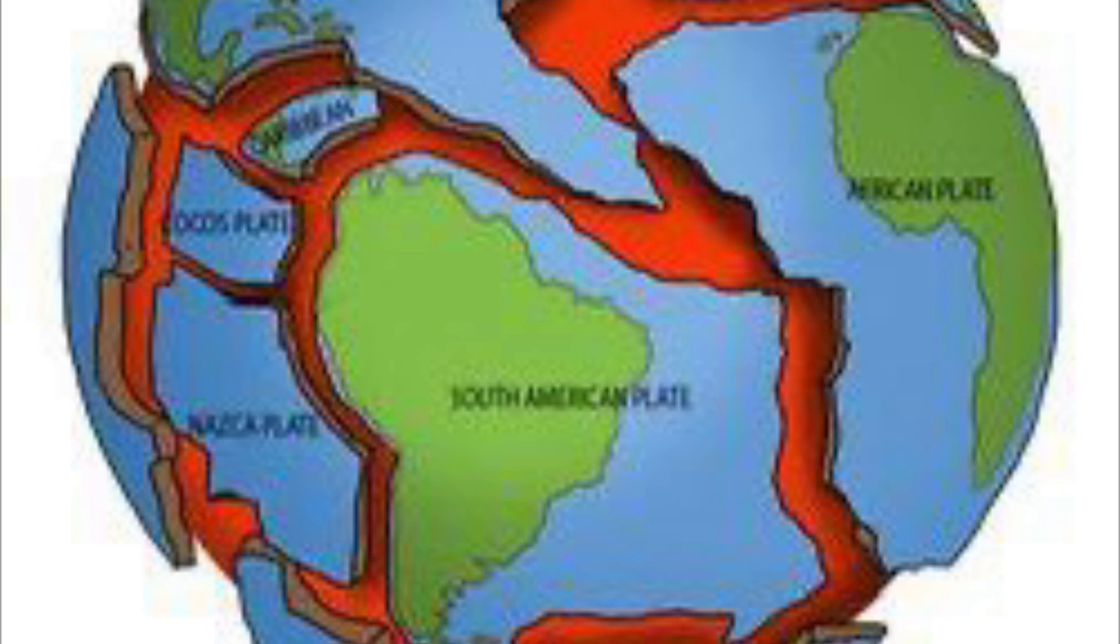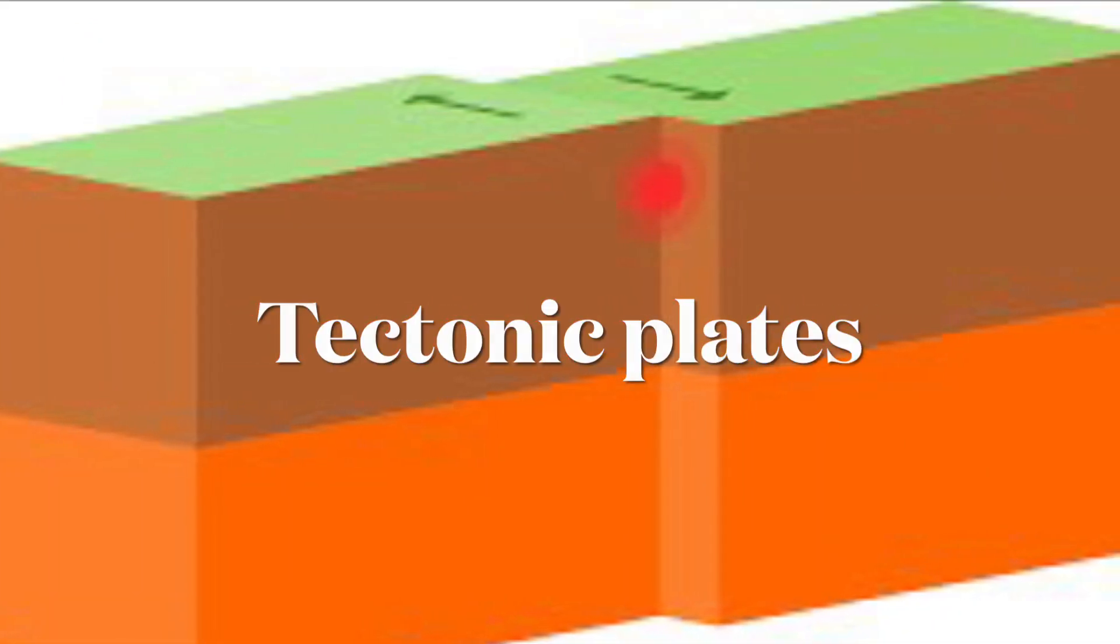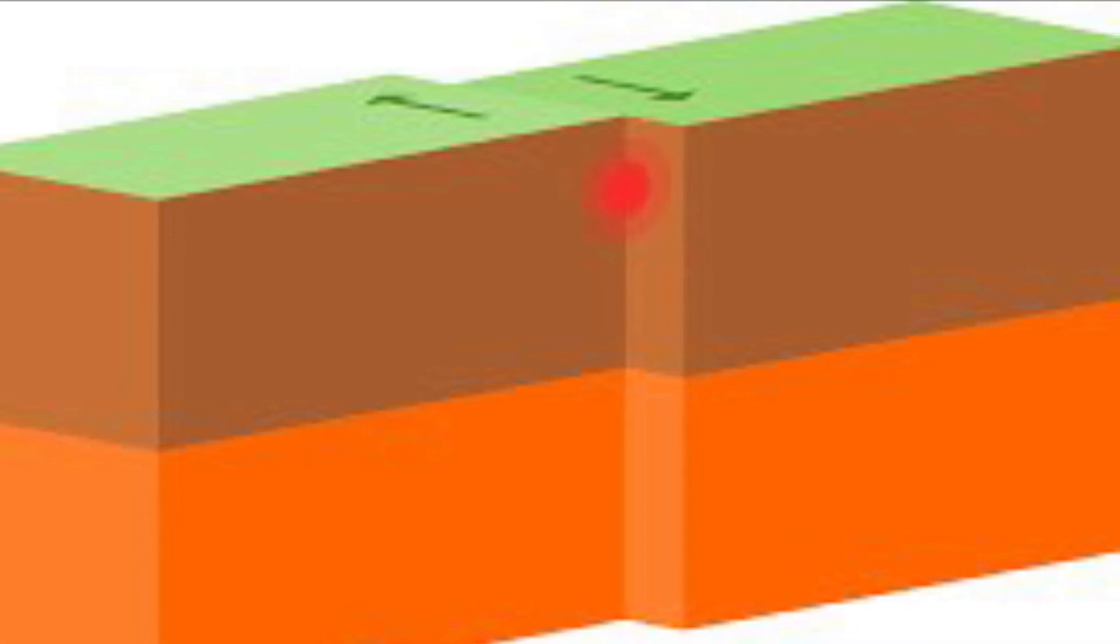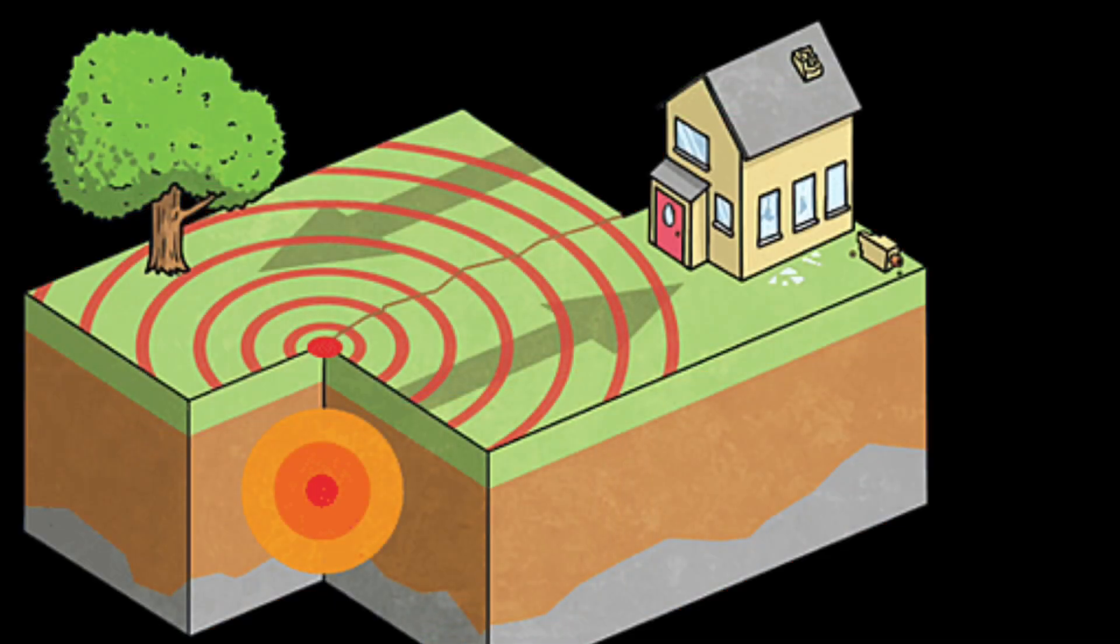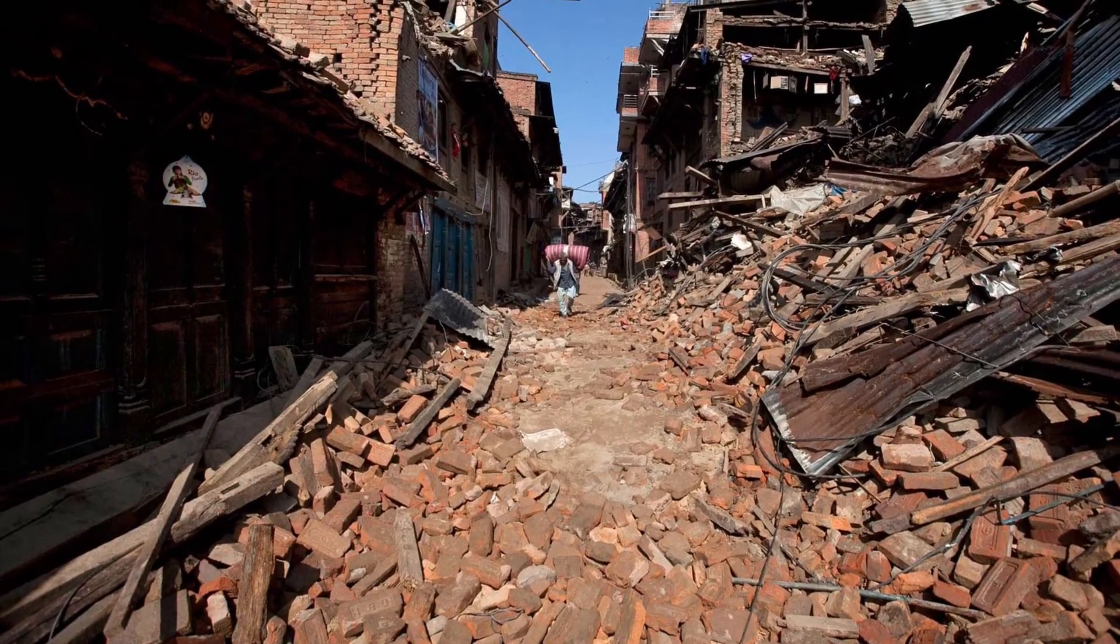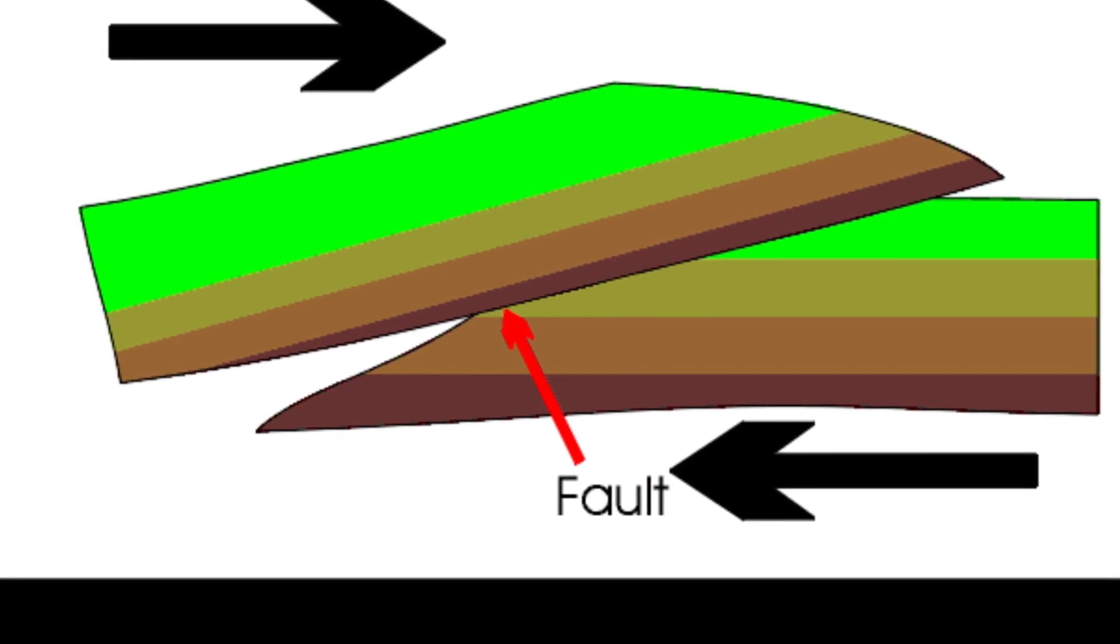Each one of those puzzle pieces is called a tectonic plate. Whenever those plates hit, bump, or slide past one another, an earthquake is caused. The surface where these plates slip is called the fault or fault plane.